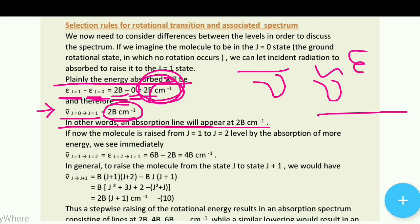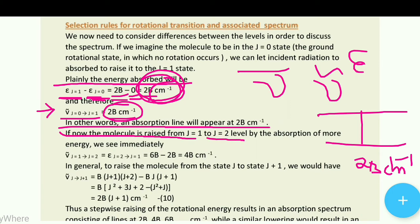An absorption line will appear at 2B cm⁻¹. This means that 2B cm⁻¹ is an absorption line. Now, if the molecule is raised from J=1 to J=2 by the absorption of more energy, we consider the J=1 to J=2 transition.